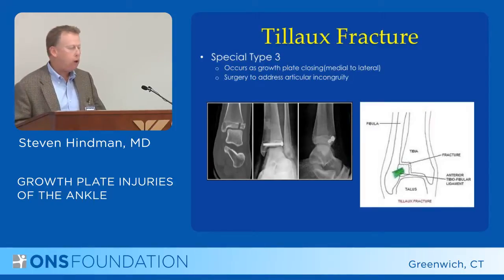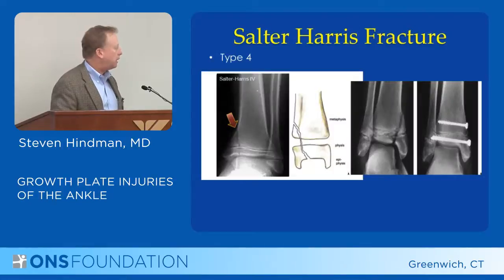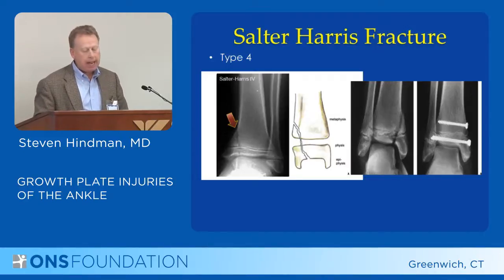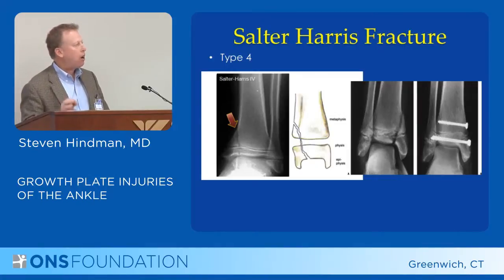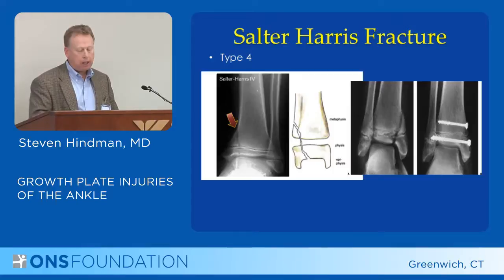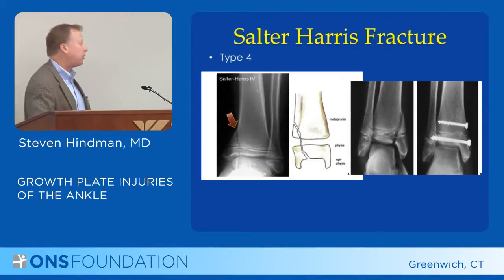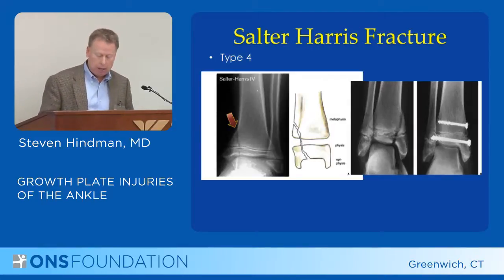The Salter-4 classification causes more potential for growth disturbance. It's broken across through the epiphysis, through the growth plate, and up through the metaphysis. The principle applies: you don't want to put hardware across the growth plate. The way you fix it is with individual screws — one in the epiphysis, one in the metaphysis — avoiding crossing the growth plate. It heals up relatively uneventfully, but there is still a relatively high incidence of growth disturbance that can be a future problem.